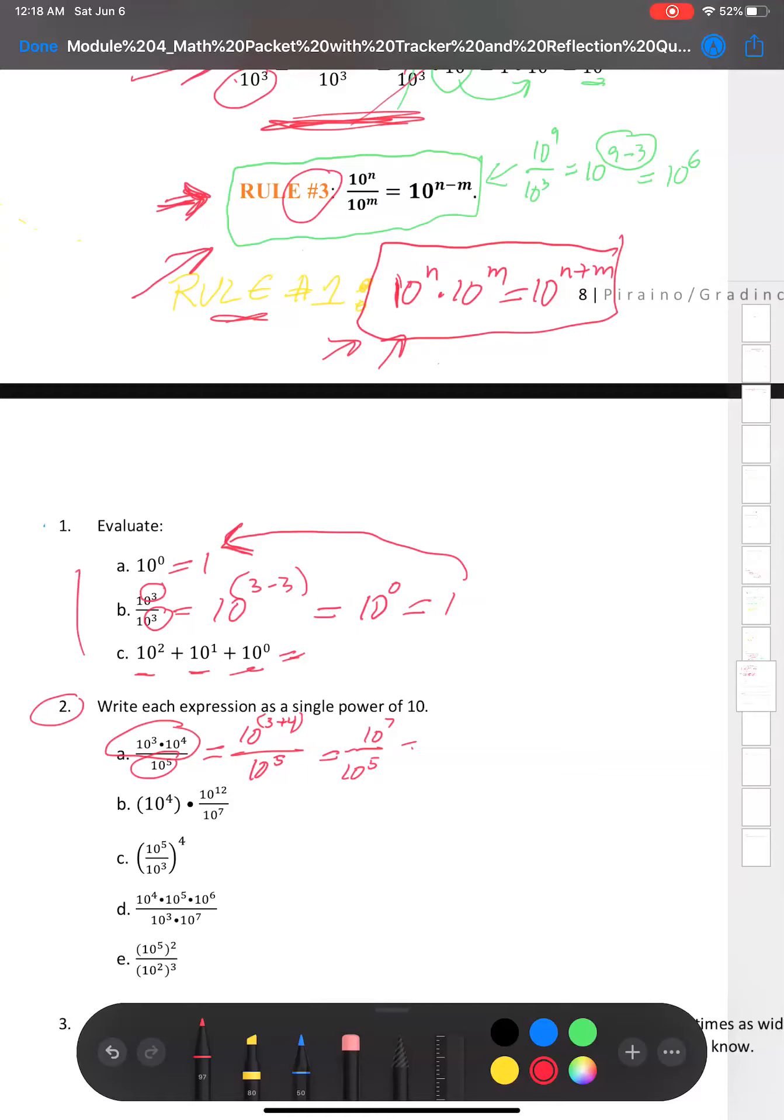And now we have 10 to the seventh divided by 10 to the fifth power. And now we're going to apply rule number three. And so we have 10 to seven minus five, and that is equal to 10 to the second power. And then we know that if we want to really take it all the way to the end, we know that the exponent tells us that we're going to multiply 10 by itself twice. And we know that that's a hundred. So there you have it.